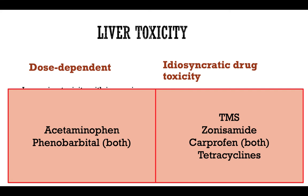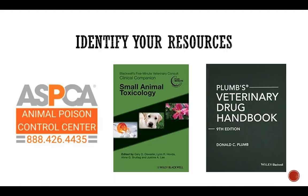Classic examples of idiosyncratic drug toxicity include trimethoprim-sulfa (TMS), zonisamide, and tetracyclines. Carprofen may also cause idiosyncratic reactions, especially in Labradors. However, giving very high doses of carprofen to a dog will most likely produce adverse reactions regarding liver function and liver injury. Since there's no way to know all information about every toxin or drug, it's important to have textbooks or online resources available to look up information about specific drugs or toxins.